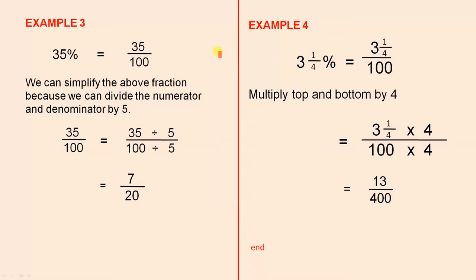Example 3: 35% is 35 per 100, which is 35 over 100. We can simplify the above fraction because we can divide the numerator and denominator by 5. So 35 over 100 is 35 divided by 5 over 100 divided by 5. 35 divided by 5 is 7, 100 divided by 5 is 20, so 35 over 100 is 7 over 20. And that's the simplest form.